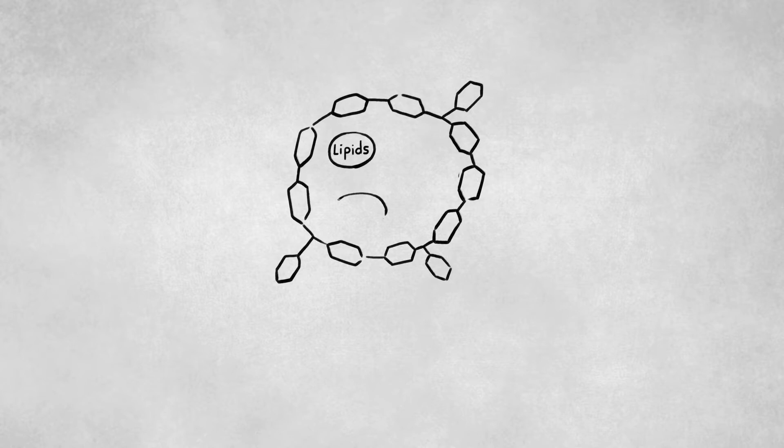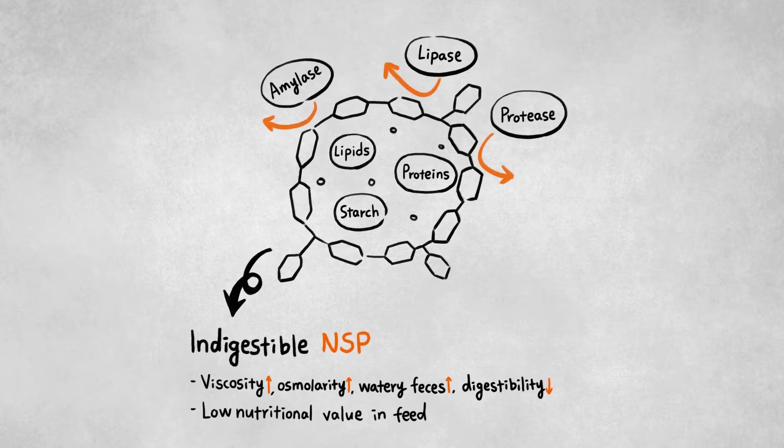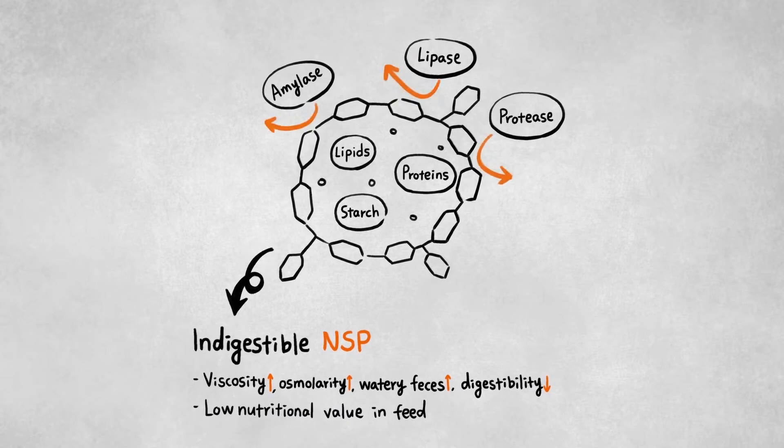Under such conditions, efficient utilization of feed is one important factor for sustainable livestock production.